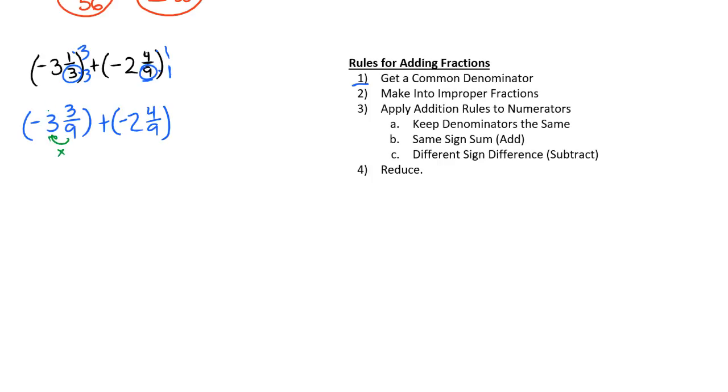We can multiply and then add, so 9 times 3 is 27, plus 3 is 30, and we'll put the negative on the top. Plus 9 times 2 is 18, plus 4 is 22. Again it's negative over 9, which gives us negative 52 over 9.